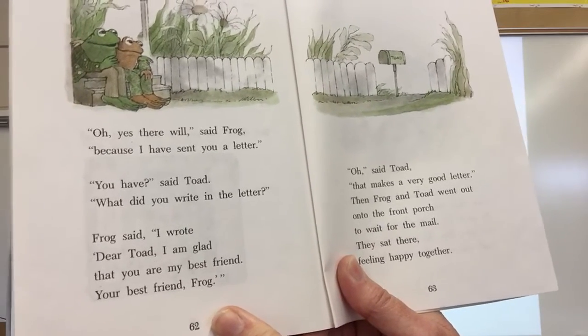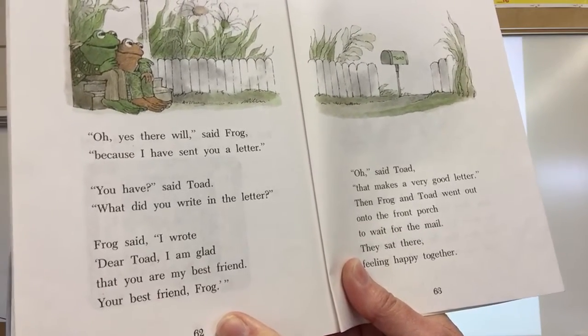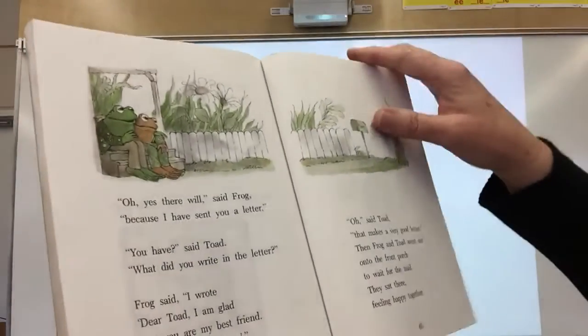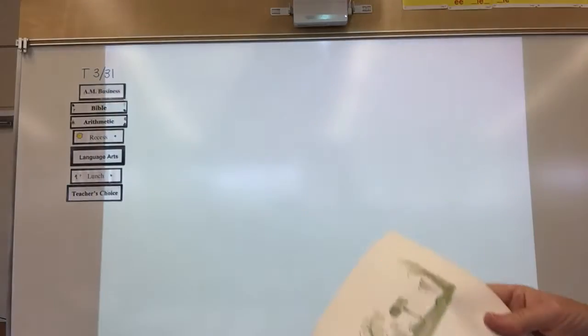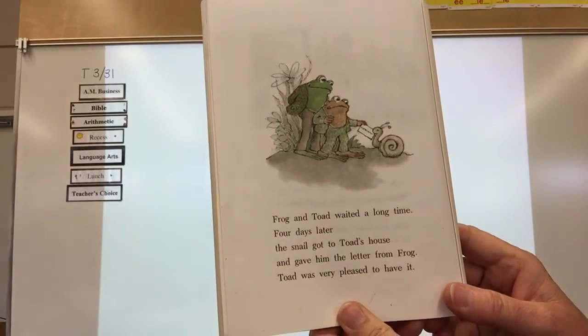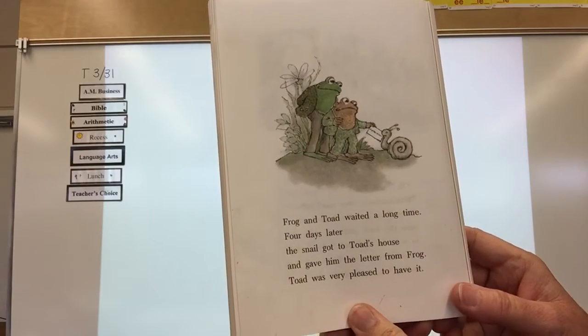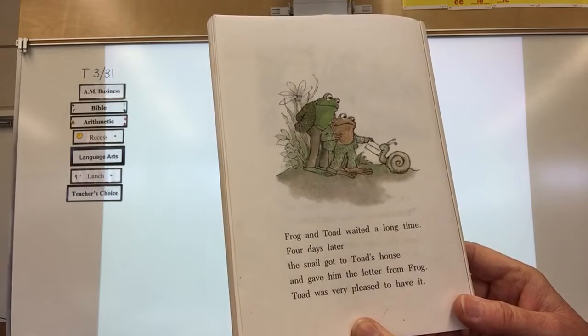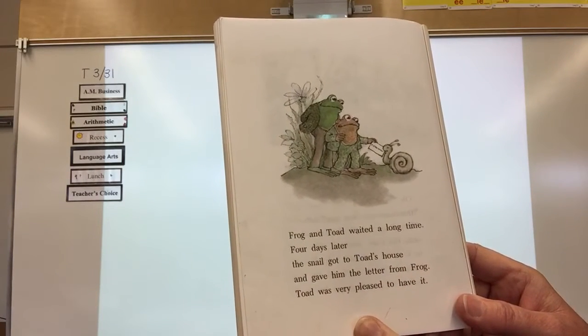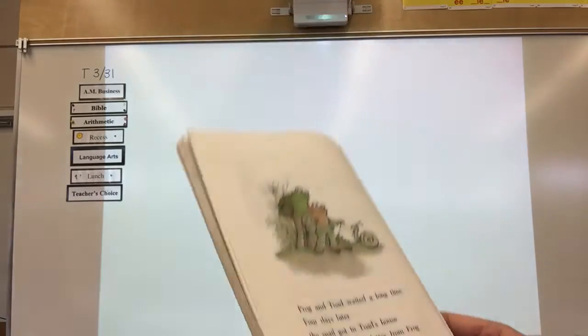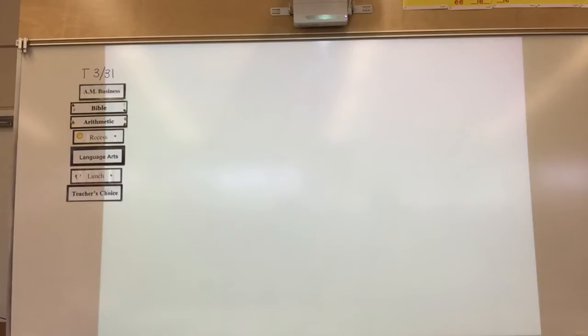Then Frog and Toad went out onto the front porch to wait for the mail. They sat there feeling happy together. Frog and Toad waited a long time. Four days later, the snail got to Toad's house and gave him the letter from Frog. Toad was very pleased to have it. Wasn't Frog a good friend to Toad, sending him mail? That was really sweet.